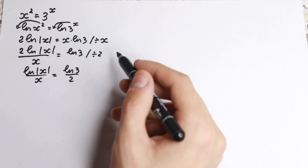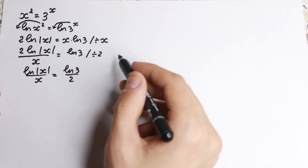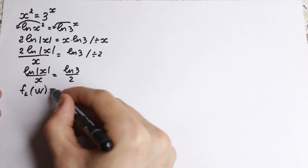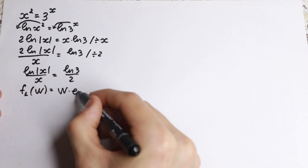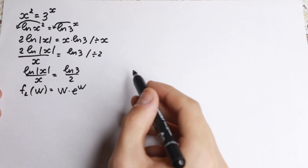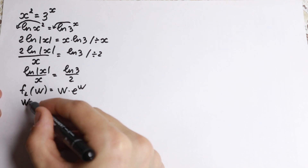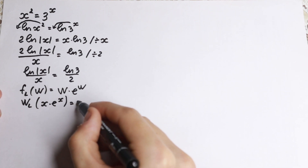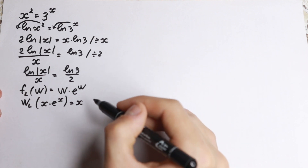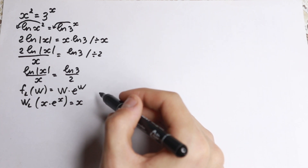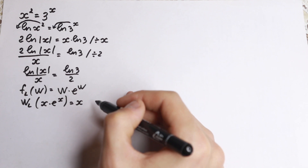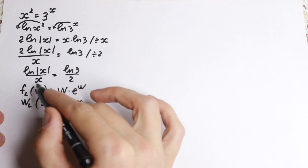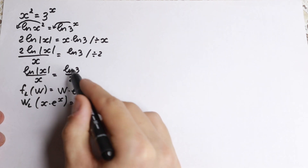Now we need to know a really important function: the Lambert W function. The Lambert W function is defined by W times e to the power W. So if we apply this function to an expression x times e to the power x, we get back x. We need to apply this Lambert W function to our current expression, so let's think about how to get there.